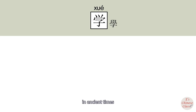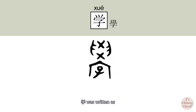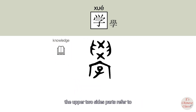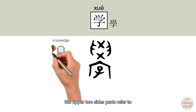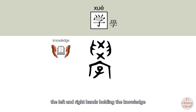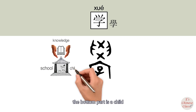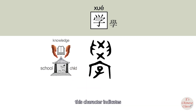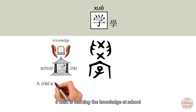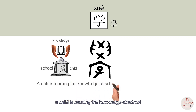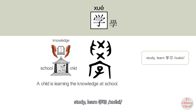In ancient times, 学 was written differently. The upper middle part refers to knowledge, the upper two sides refer to the left and right hands holding the knowledge. The middle part looks like a house, referring to school. The bottom part is a child. This character indicates a child learning knowledge at school. So 学 means study, learn — 学习.